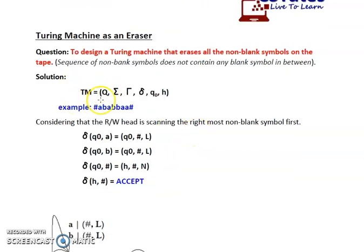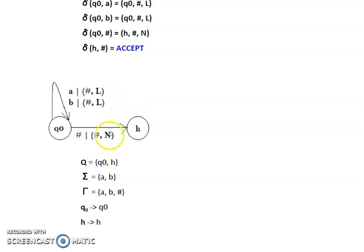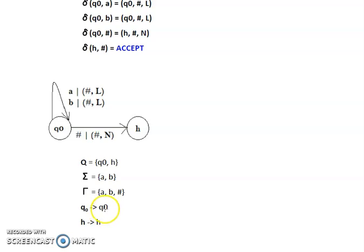To formally represent this Turing machine with six tuples: Q = {Q0, H}; sigma = {A, B} (all symbols except blank); gamma = {A, B, hash} (all symbols including blank); Q0 is the initial state; and H is the halt state.